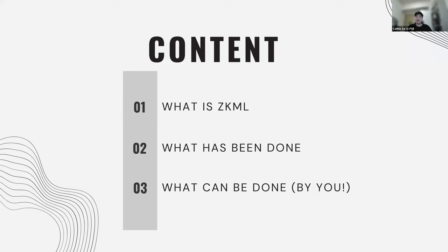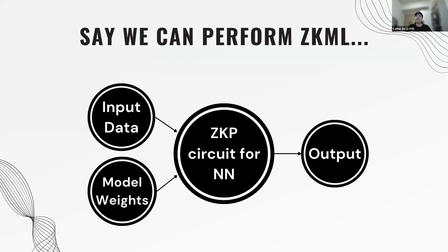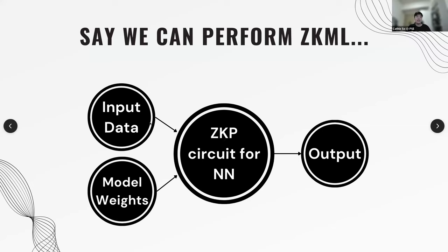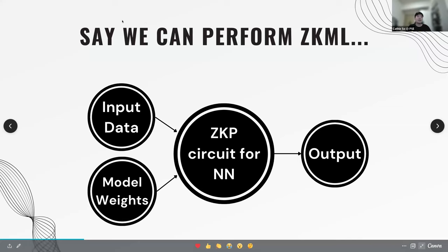When we talk about ZKML, you'll usually see some diagram like this. The idea is we have some kind of machine learning model that has already been turned into a ZK circuit — for example, a ZK circuit that performs neural network inference. Let's take a step back and talk about machine learning. For ML inference, you have three components: your input data — for example, if this is a face recognition model, the input data would be the image of your face.